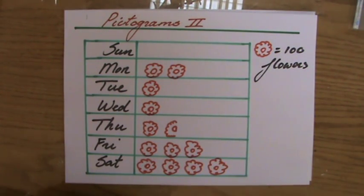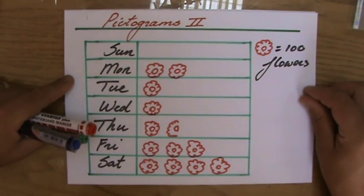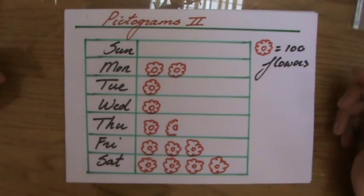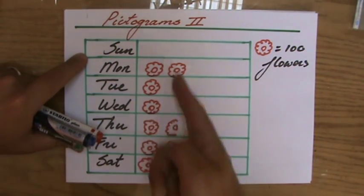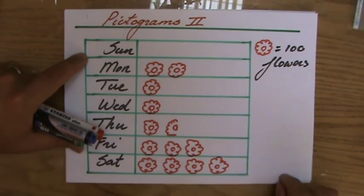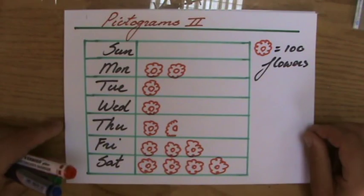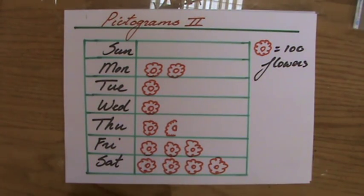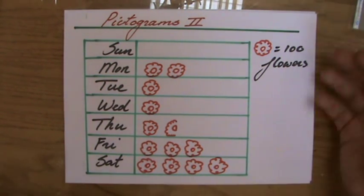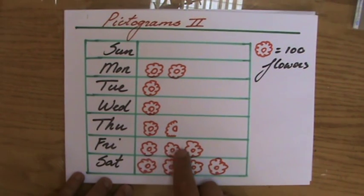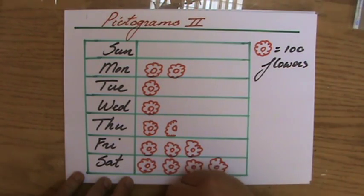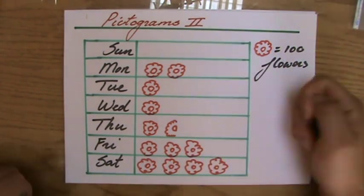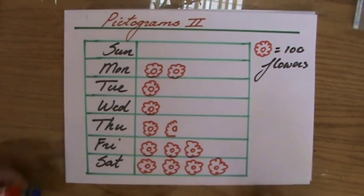For example, the question could be: on which day did the flower seller sell the most flowers? Because the images are nicely aligned, you can easily see that Saturday has the most flowers — so Saturday is the best day of the week. Another question: how many flowers were sold on Friday? On Friday there are three flower pictures, each worth 100, so that's 300 flowers — not three flowers!